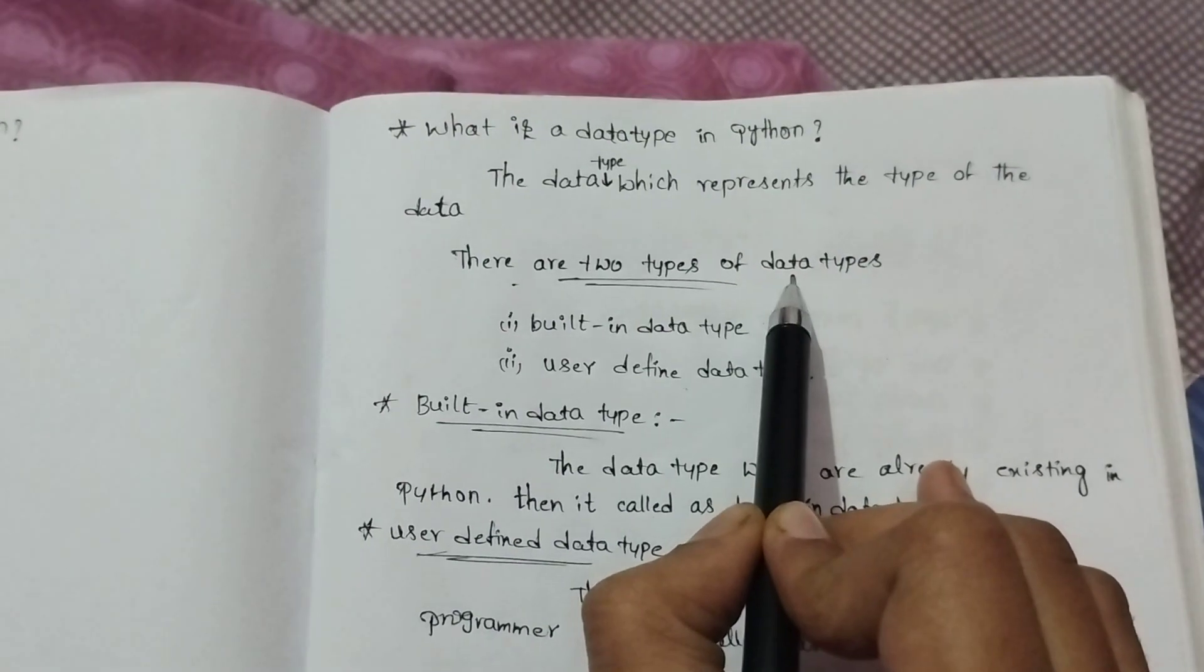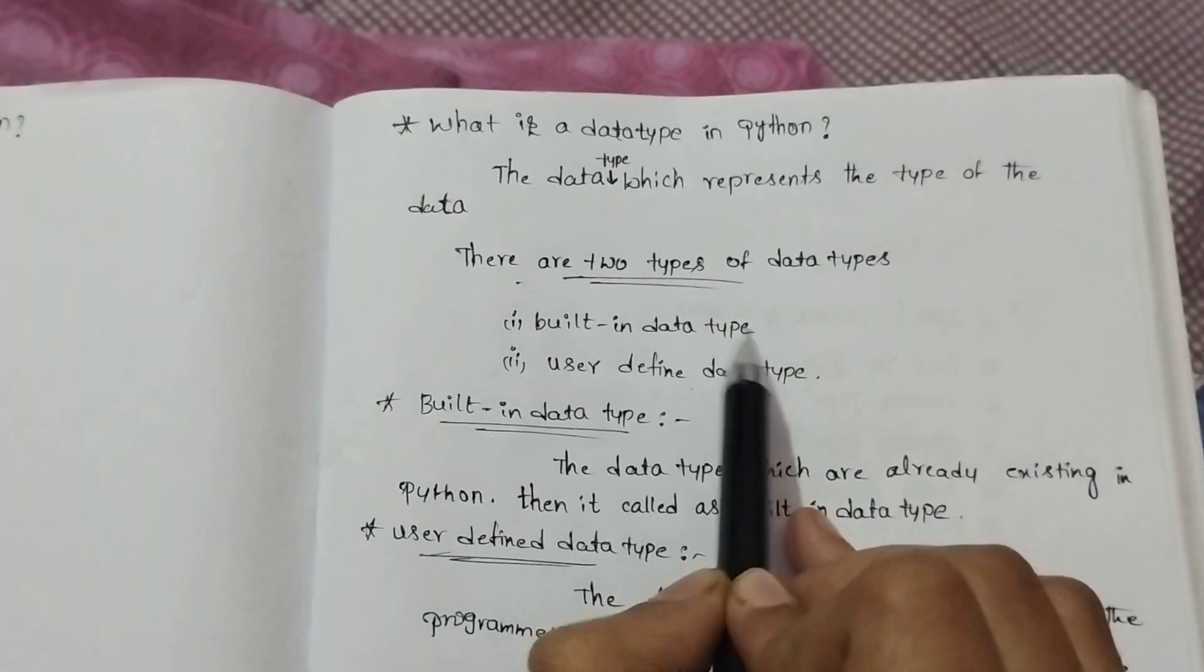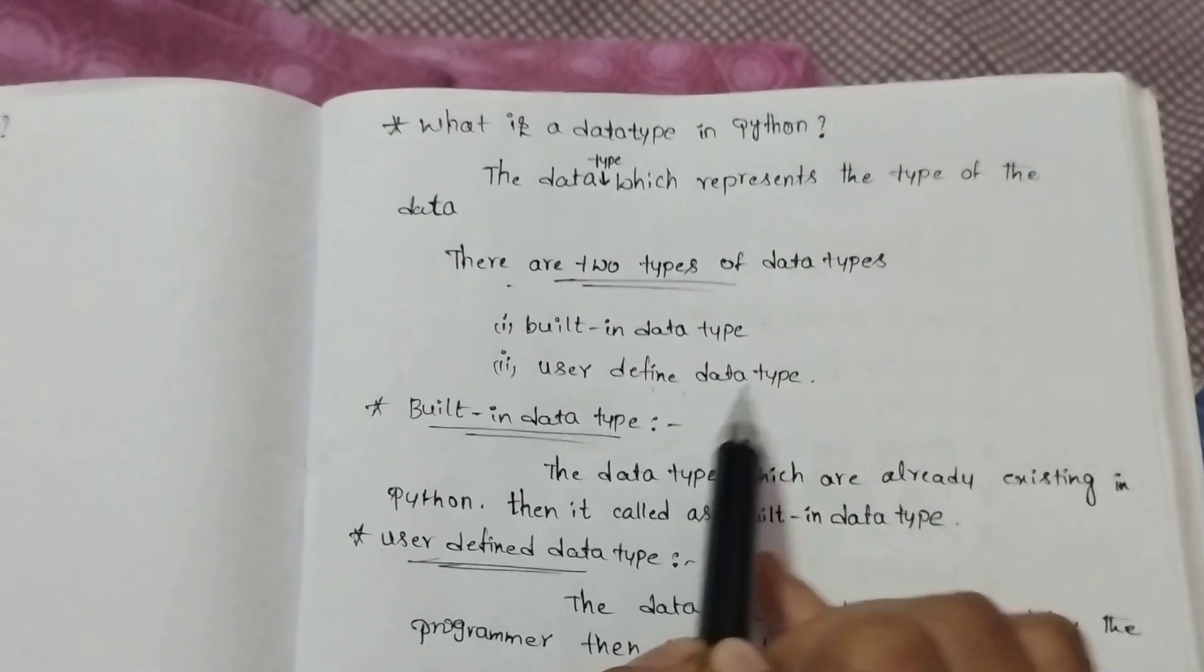There are two types of data types: first one is built-in data type, and then second one is user-defined data type.